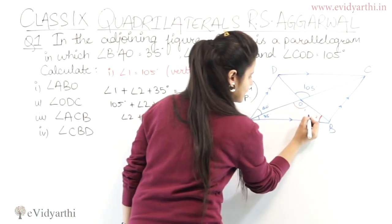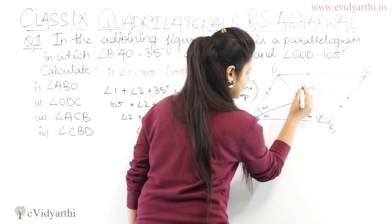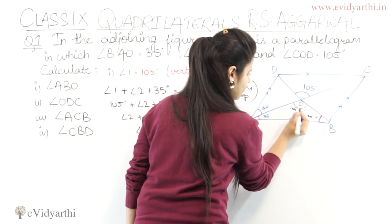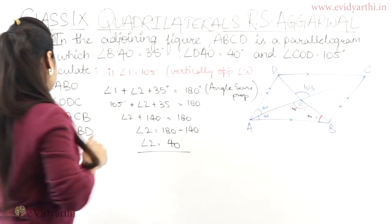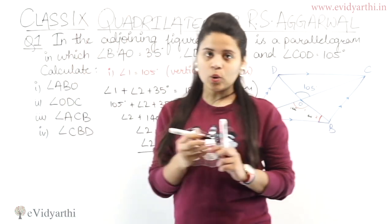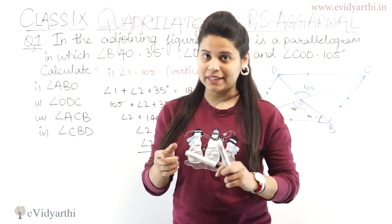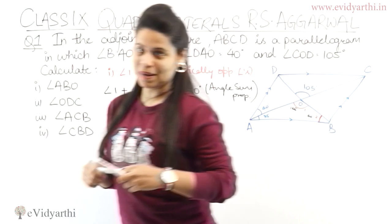So we can simply write it here. This is 40 degrees, and here we have 105 degrees. So this was our first part, which was angle ABO and that is 40 degrees. Now let's move to the second part.